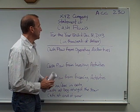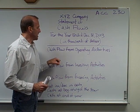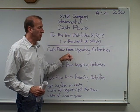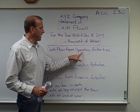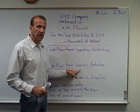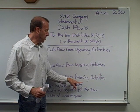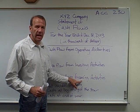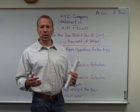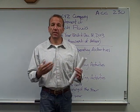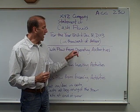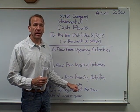The statement of cash flows is divided into three sections. You're going to have an operating section, an investing section, and a financing section. What you're doing is showing the cash flows for the year — in this example 2013 — in one of these three areas.